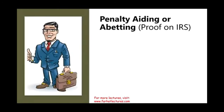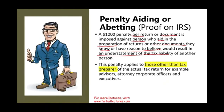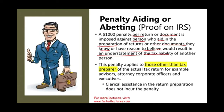There is also a penalty for aiding or abetting, and the burden of proof is on the IRS. A $1,000 penalty per return or document is imposed against any person — not just a tax preparer — who aids in the preparation of a return and has reason to believe it would result in an understatement of tax liability. This could apply to an advisor, attorney, corporate officer, or executive. Those providing only clerical assistance, such as assembling the return, do not incur this penalty.